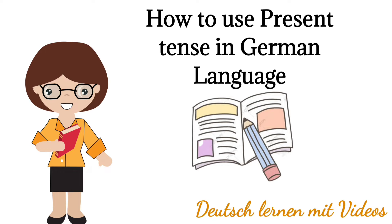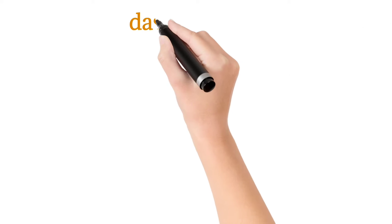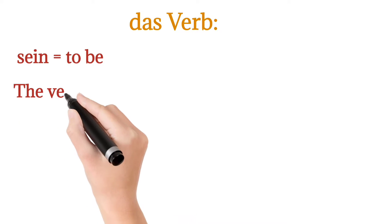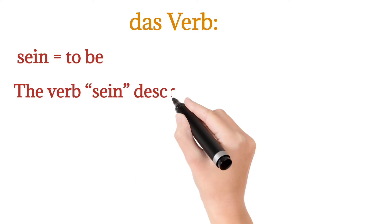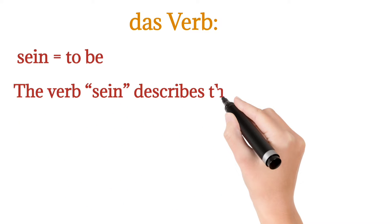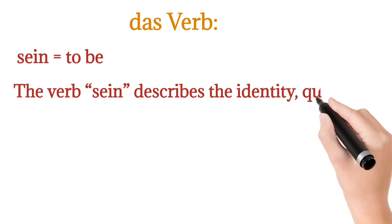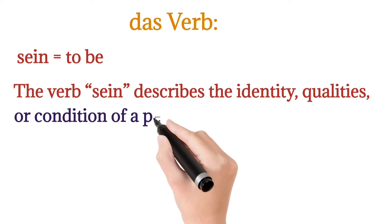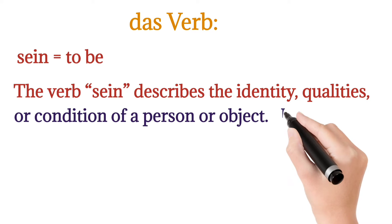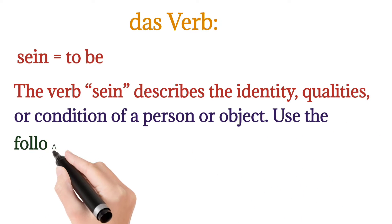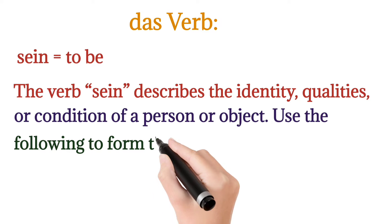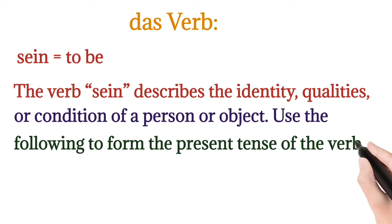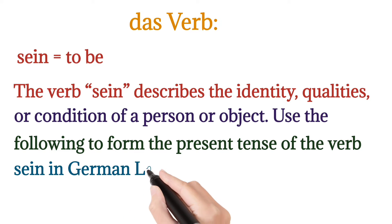In this video we will use the verb 'sein' in German language, which means 'to be'. The verb 'sein' describes the identity, qualities, or conditions of a person or object. Use the following forms for the present tense of the verb 'sein' in German.